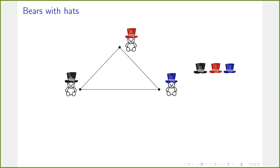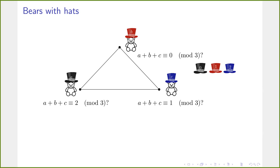We can denote the hat colors A, B, and C, and there is a quite easy strategy for the bears. When we consider the colors to be numbers 0, 1, and 2, each bear tests a hypothesis about the sum of these three numbers. One bear tests whether the sum equals 0 mod 3, one tests 1 mod 3, and the third tests 2 mod 3. Since each bear can see both others, it can calculate what its own color would have to be to achieve the desired sum. This is a winning strategy because always precisely one bear guesses correctly.